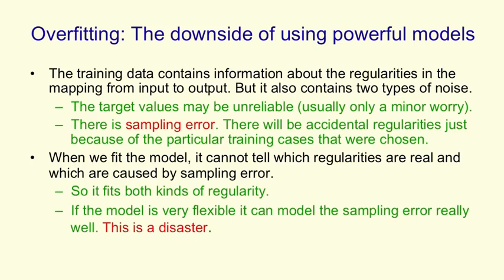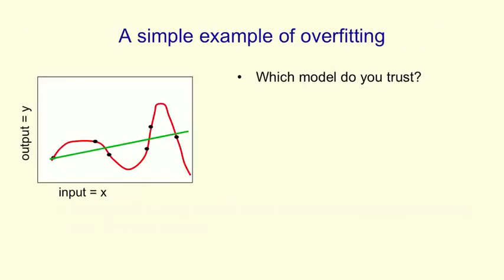This is best understood by looking at a little example. So here we've got six data points shown in black, and we can fit a straight line to them. That's a model that has two degrees of freedom, and it's fitting the six y values given the six x values. Or we can fit a polynomial that has six degrees of freedom. And by hand I've drawn in red my idea of a polynomial with six degrees of freedom fitting this data. And you'll see the polynomial goes through the data points exactly, and so it's a much better fit to the data. But which model do you trust?